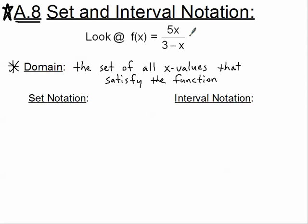x can be every number except for one value. That value is 3. If x were 3, then our denominator would become 3 minus 3, and of course 3 minus 3 is 0 — and that is the one no-no in Algebra, in Math, in Life. You cannot divide by 0; it just does not make any sense. So x cannot be 3. x can be every other real number except for 3.